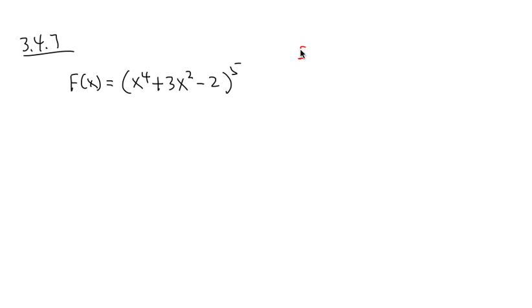We are going to write down the outside function first, which is box to the fifth power. And then the function inside, which is the g function, it's just the function that's literally inside: x to the fourth power plus 3x squared minus 2.